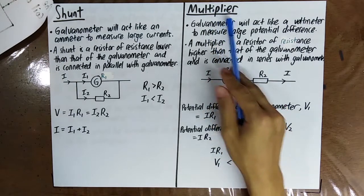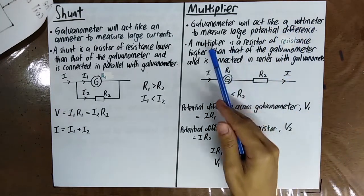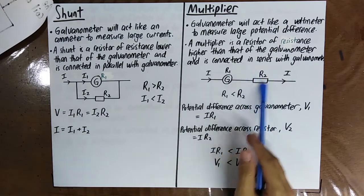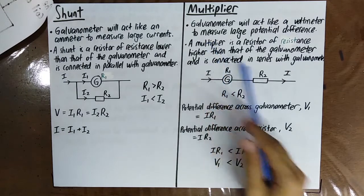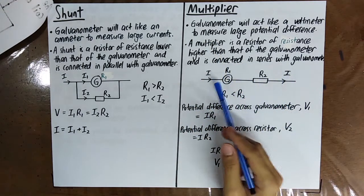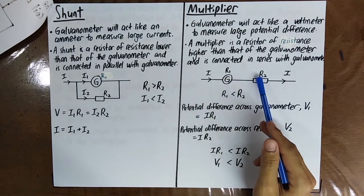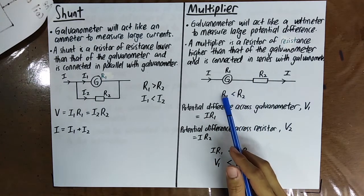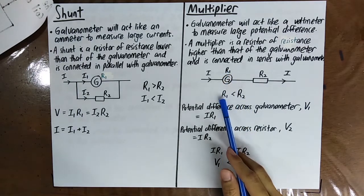On the other hand, when you want to use the galvanometer to measure a very, very large potential difference, you have to use a multiplier. A multiplier is just a resistor of resistance higher than that of the galvanometer, and the multiplier is connected in series with the galvanometer. When they are connected in series, the current through the galvanometer is the same as the current through the multiplier. The resistance of the multiplier should be much higher than the resistance of the galvanometer.